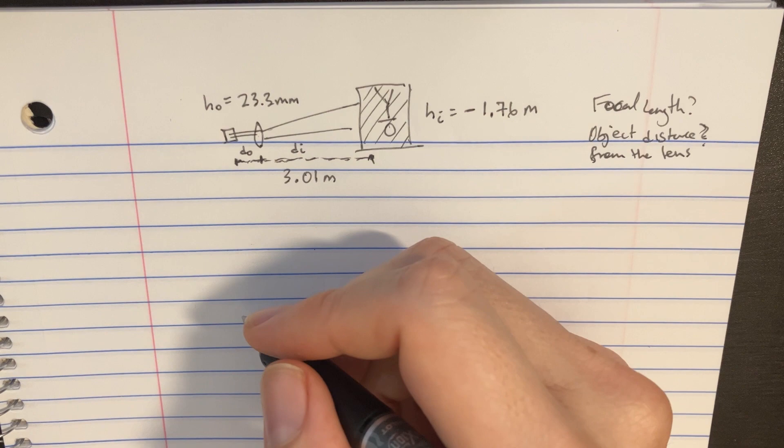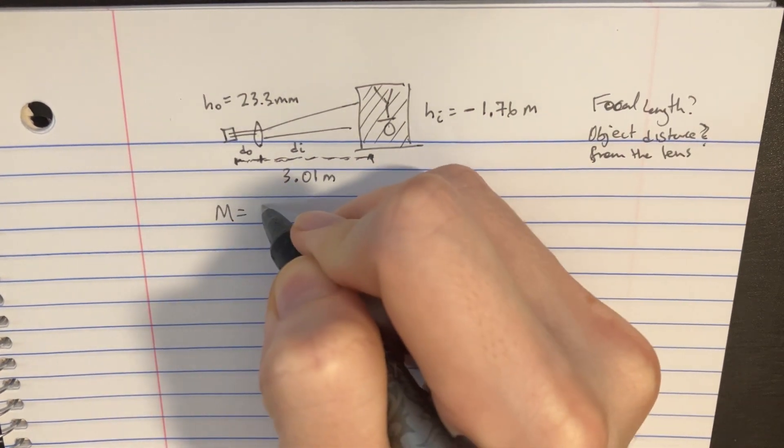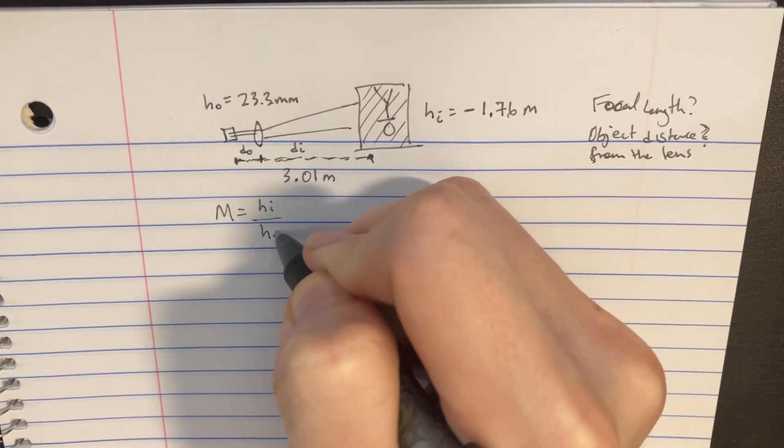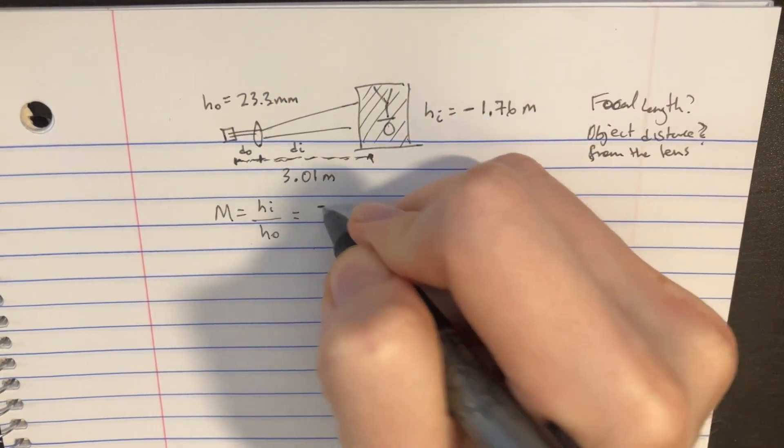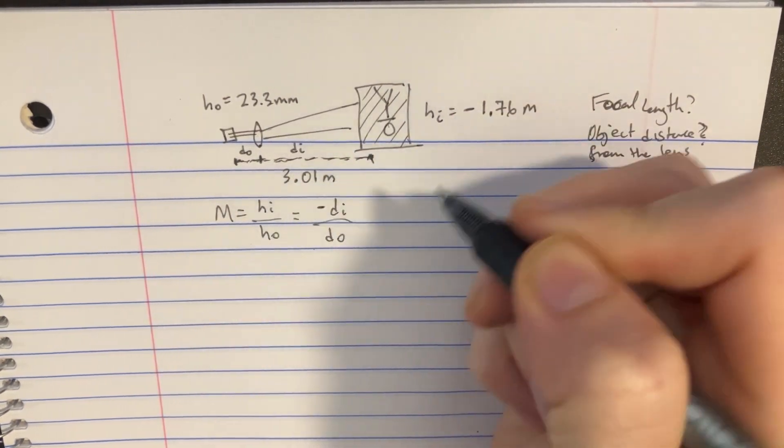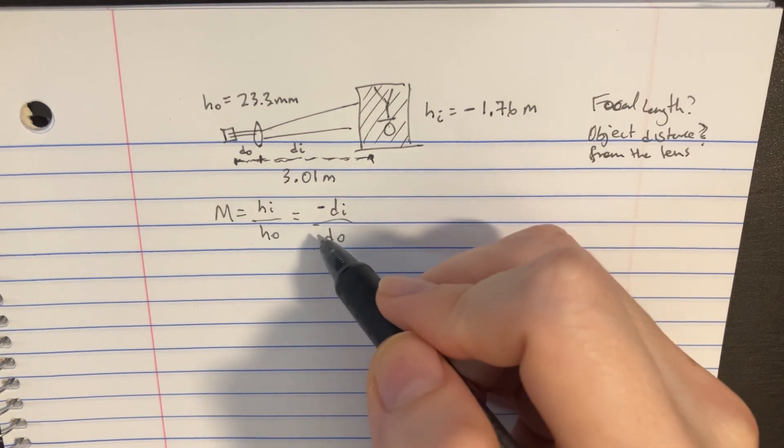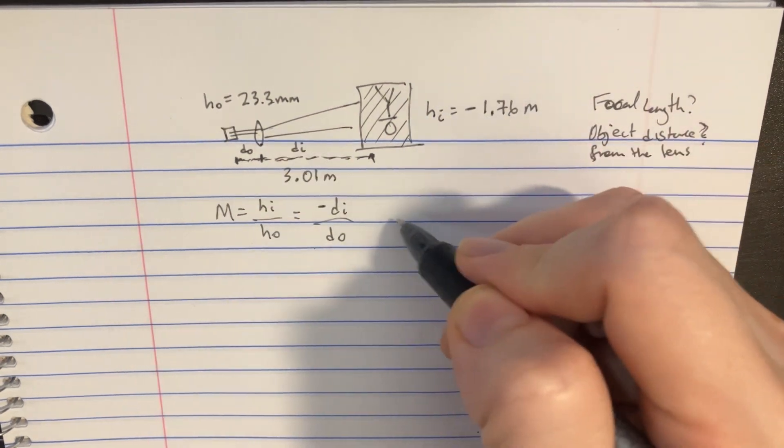And we know that this magnification is equal to HI over HO, but it's also equal to negative DI over DO. And so we should be able to get some kind of ratio out of this.